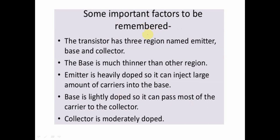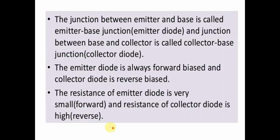Some important factors to remember: the transistor has three regions — emitter, base, and collector. The base is much thinner than the other regions. The emitter is heavily doped, the base is lightly doped, and the collector is moderately doped. The junction between emitter and base is called the emitter-base junction. The junction between base and collector is called the collector-base junction. The emitter diode is always forward biased and the collector diode is always reverse biased. The resistance of the emitter diode is very small, and the resistance of the collector diode is high.